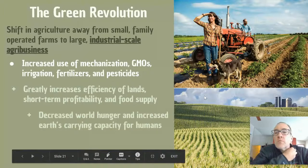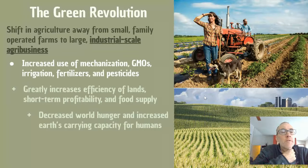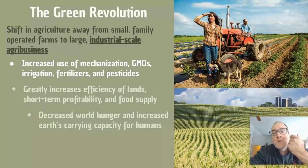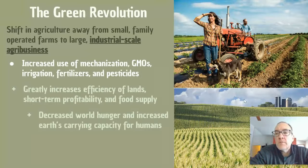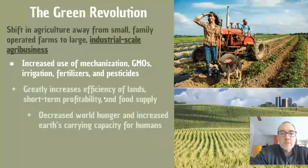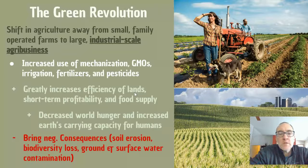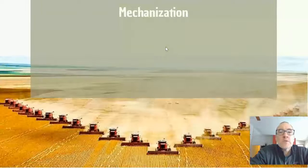The green revolution decreased world hunger, helping avoid that Malthusian crisis, and increased the earth's carrying capacity for humans. We are currently reaching up to 8 billion people on this planet, and while people do still starve, not at the levels previously hypothesized. It has negative consequences though: you already know about soils and soil erosion, loss of biodiversity, and there's also lots of groundwater and surface water contamination that happens through these agricultural practices.